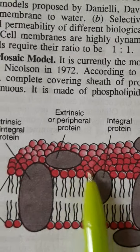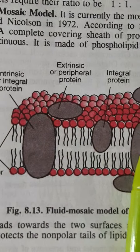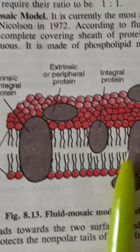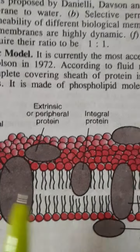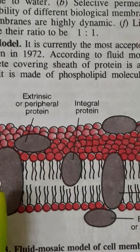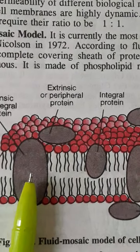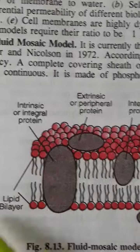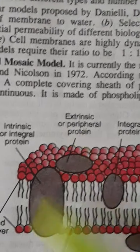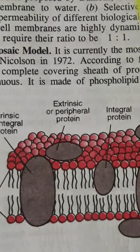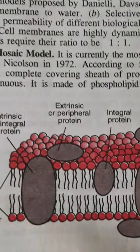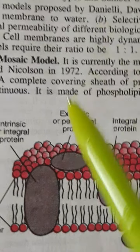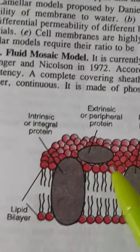The next important model is the fluid mosaic model, given by Singer and Nicholson. According to this model, the membrane does not have a uniform deposition of lipids and proteins; instead it has a mosaic of the two. Unlike in the Robertson and Danieli-Davson models where proteins are present only on the outer sides, here proteins are present throughout the membrane.